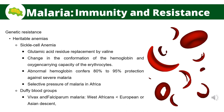Innate anemias also exist, such as sickle cell anemia and Duffy blood groups. In persons homozygous for sickle cell anemia, a glutamic acid residue is replaced by valine in hemoglobin, interfering with oxygen-carrying capacity. Individuals with sickle cell anemia usually die before age 30, but heterozygotes with some normal hemoglobin can live normal lives, with 80–95% protection against severe malaria. West Africans and their descendants possessing Duffy blood groups are also much less susceptible to vivax malaria.